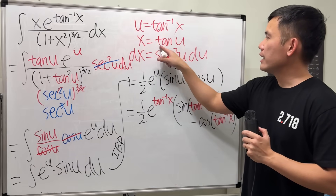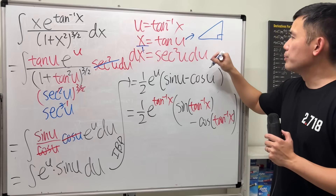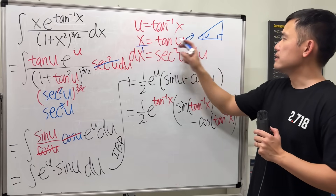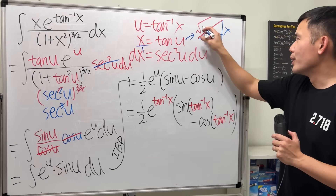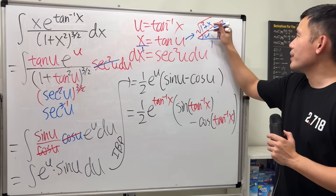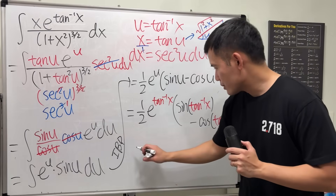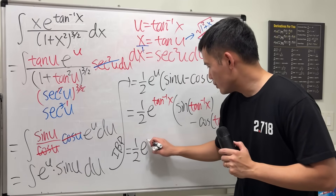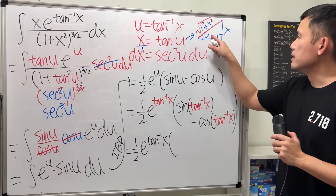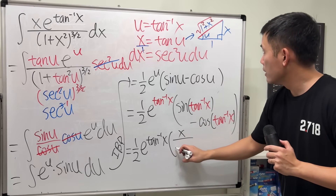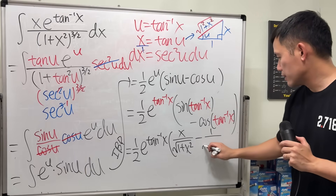Since tangent u equals x, which is x over 1, we draw a right triangle with angle u. The opposite side is x, the adjacent is 1, and the hypotenuse is the square root of 1 squared plus x squared, which is √(1+x²). So sine of inverse tangent of x is opposite over hypotenuse, giving x over √(1+x²), and cosine of inverse tangent of x is 1 over √(1+x²).